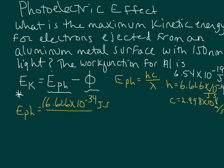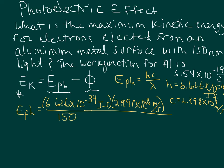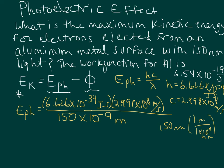That's negative 34 joule seconds — Planck's constant times the speed of light, 2.998 times 10 to the eighth meters per second. And here's where I'm going to do the conversion from nanometers to meters. There are 10 to the 9 nanometers in one meter, so I'm going to write 150 times 10 to the negative 9 meters. We take 150 nanometers divided by 1 times 10 to the ninth nanometers per meter, and we end up with 1.5 times 10 to the negative 7 meters. So all I've done is taken a shortcut with non-standard scientific notation, but it works.